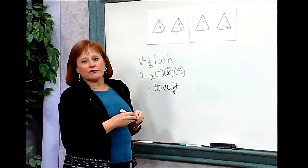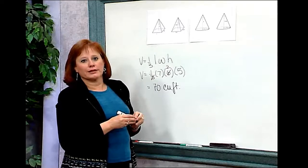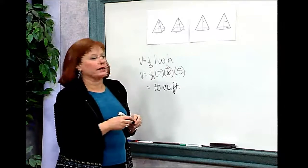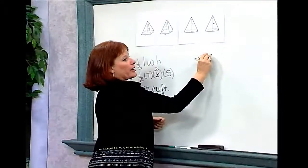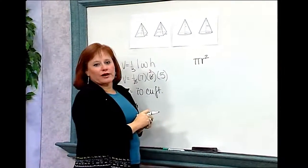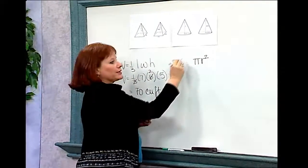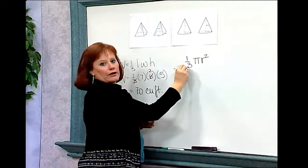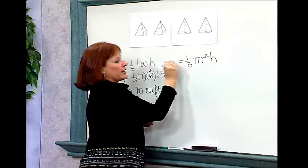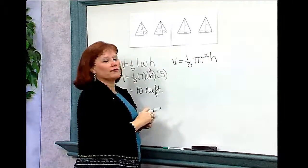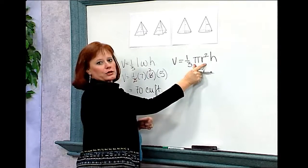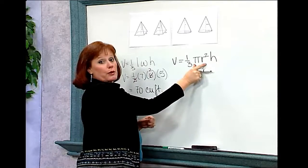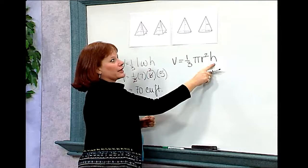If I want to find the volume of a cone, I'm going to take one-third of the base times the height. In this case, the base is circular — the area of a circle is pi r squared. So to find the volume, I take one-third of the area of the base times the height. That gives me the volume of a cone: one-third times pi r squared times the height.